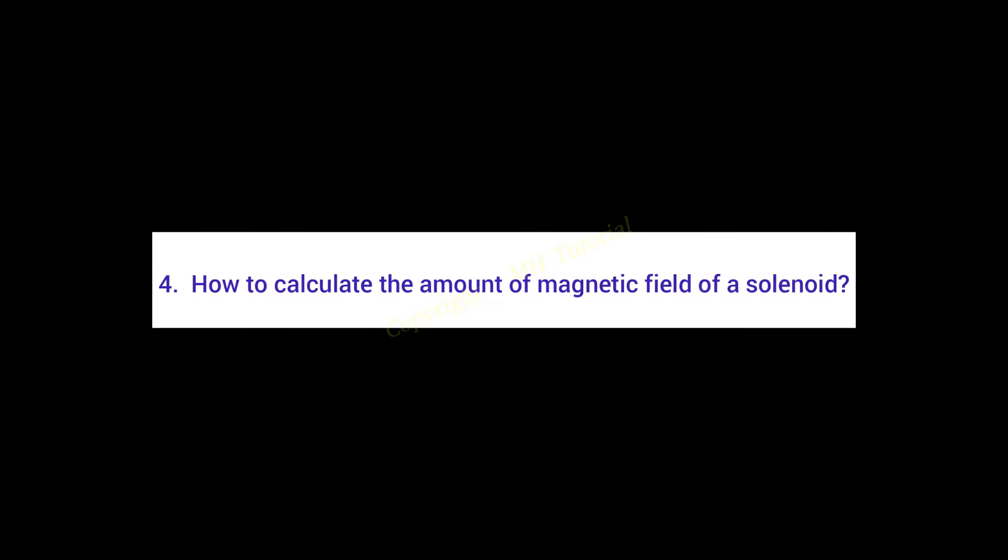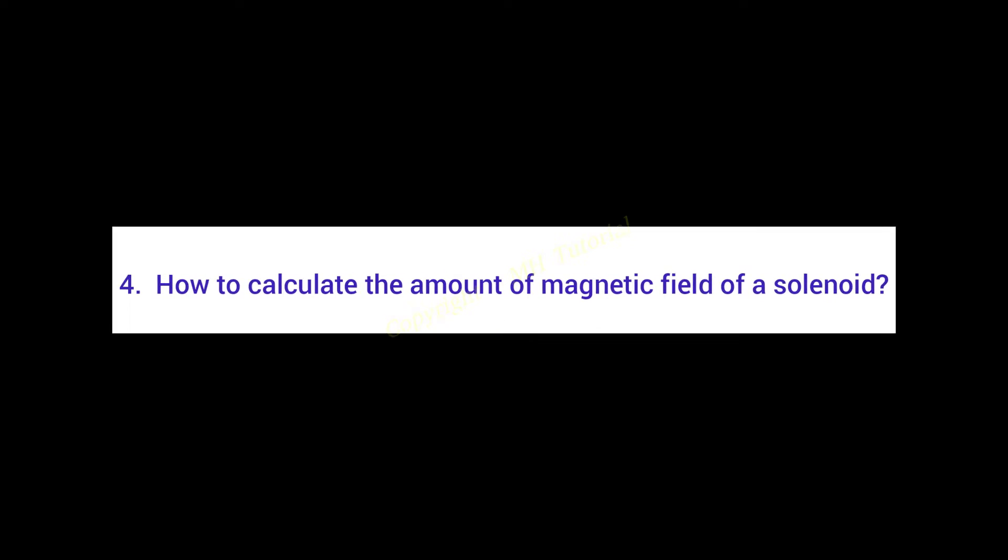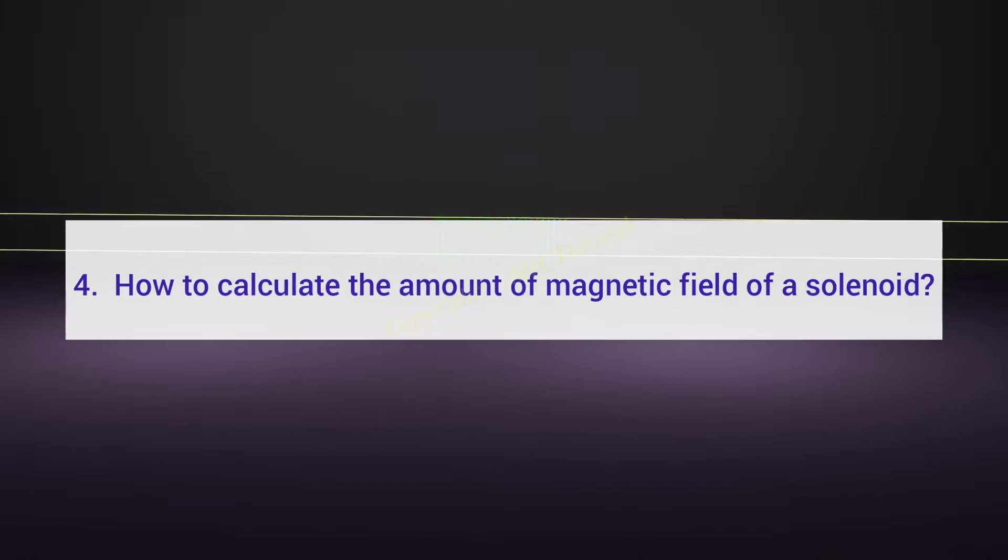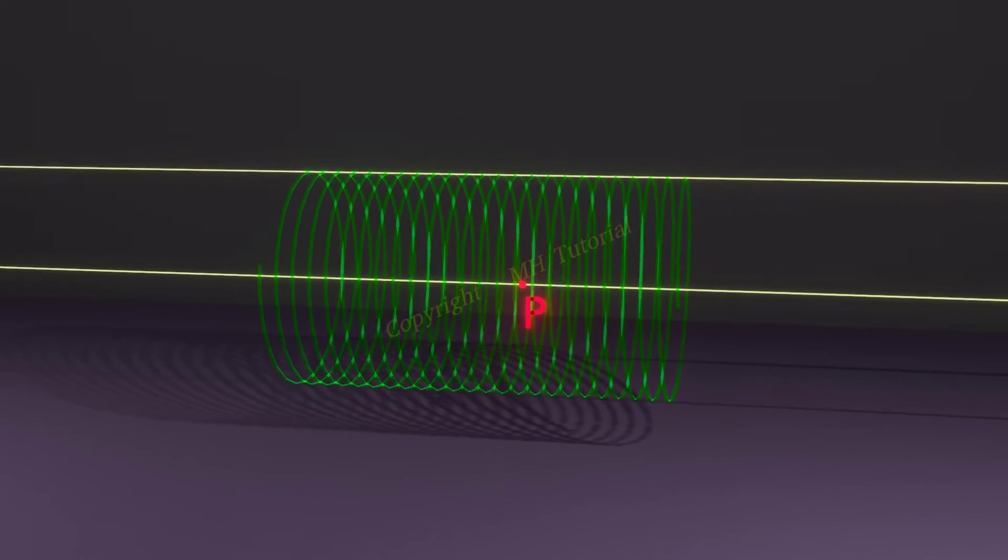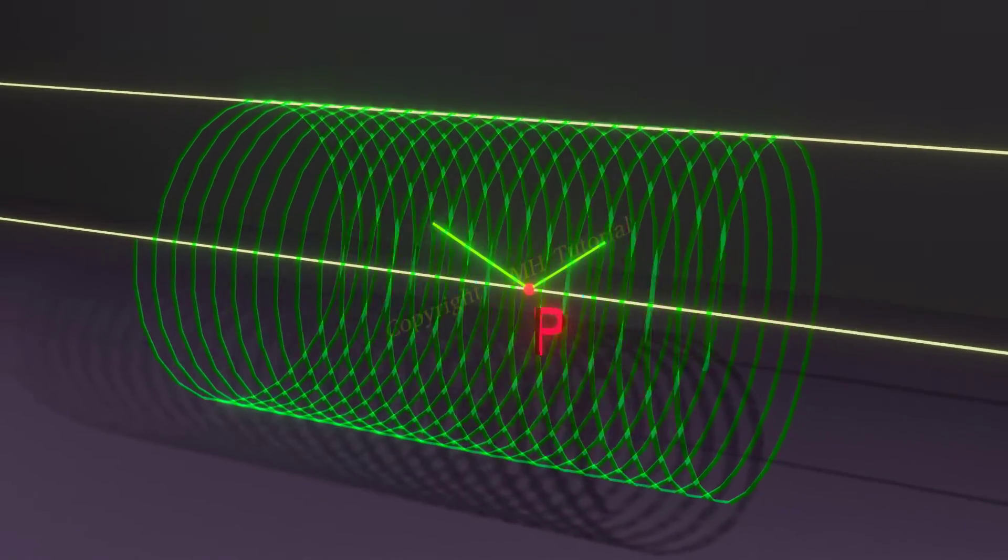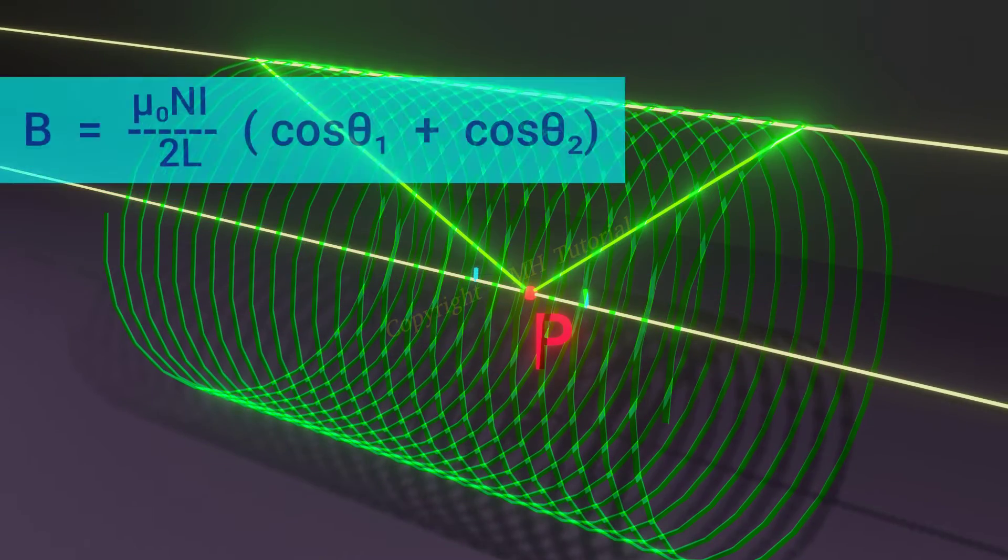Fourth question. What is the amount of magnetic field produced by the solenoid? For a solenoid of finite length, the magnetic field at any axial point P can be calculated to be equal to this.